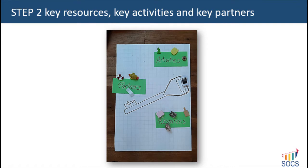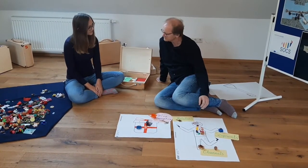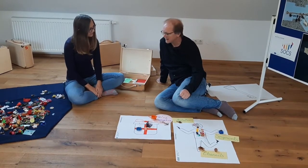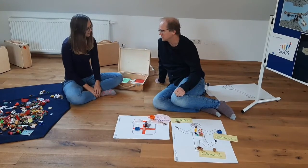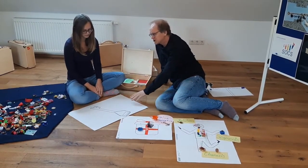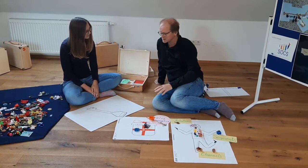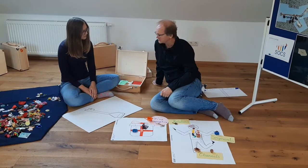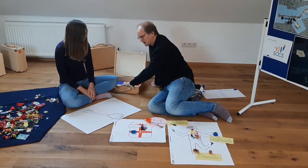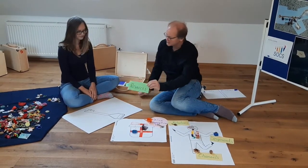Step 2: how to produce the product or deliver the service — key resources, key activities, and key partners. Now we already know whom you would like to sell your service to, what you would like to deliver, and now we have to talk about how you will be able to deliver your service. When you talk about how, it's important not to think of each small single step, but to focus on key resources, key activities, and key partners — just a very rough big picture.